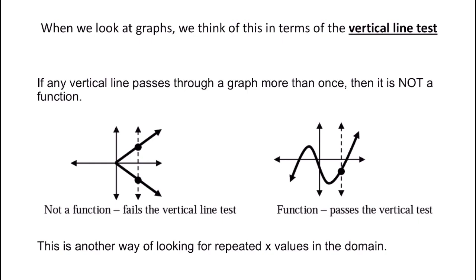You can see here it doesn't matter how many vertical lines you draw — they're only going to pass through this graph once, so that means it is a function. The vertical line test is really another way of saying look for repeated x values, because if you have a repeated x value, your vertical line is going to pass through more than one point. These two points right here will have the same x coordinate, so the vertical line test is just another way of saying look for the repeated x.